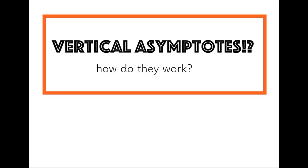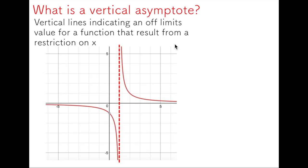Vertical asymptotes. In this video, I'm going to very quickly explain how they work and how they impact the graph of a rational function. So what is a vertical asymptote? Vertical asymptotes are vertical lines that indicate an off-limits value for a function, and these result from a restriction on x.